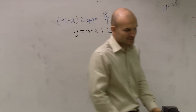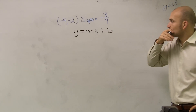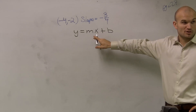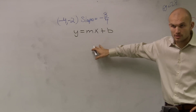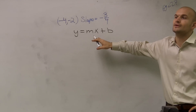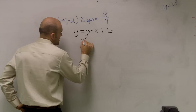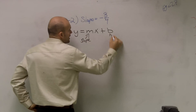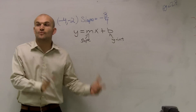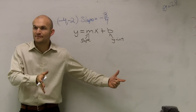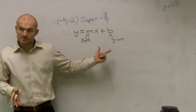I want to remind you guys what we've talked about so far with slope-intercept form. Here's our original equation we've talked about, remembering that M represents our slope and B represents our y-intercept. So we spent time looking at graphs, and whatever the graph is, we can write the equation depending on what the y-intercept is and what the slope is.